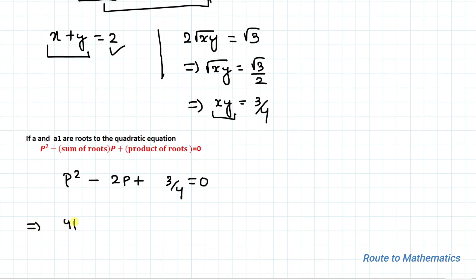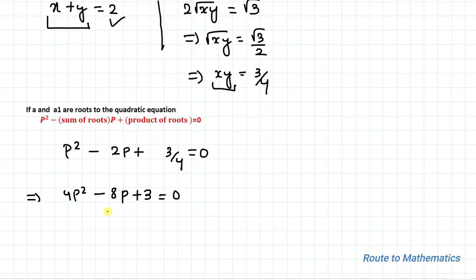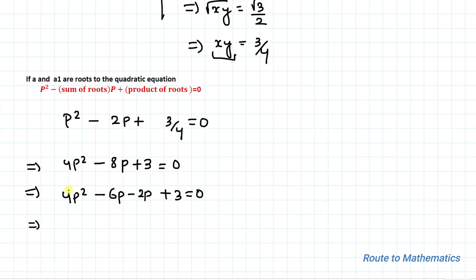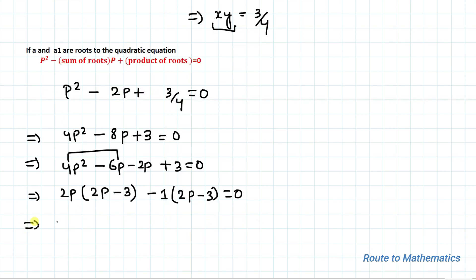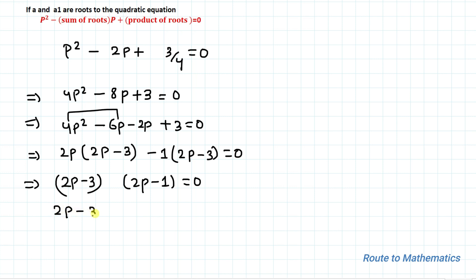Taking the LCM, we can write 4p² − 8p + 3 = 0. We apply the middle-term splitting method to find the factors. We split −8p as −6p − 2p, giving 4p² − 6p − 2p + 3 = 0. Taking 2p common from the first two terms: 2p(2p − 3) − 1(2p − 3) = 0. Taking (2p − 3) common: (2p − 3)(2p − 1) = 0.